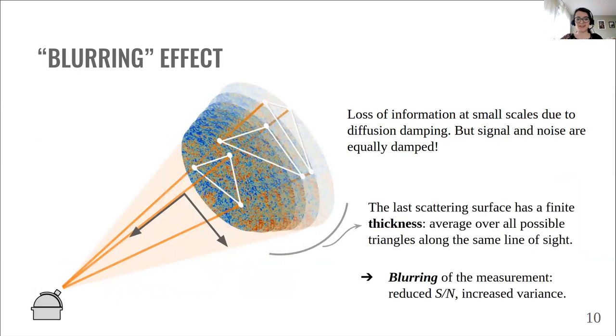Well, this last scattering surface has a finite thickness. And this illustration highlights the fact that the damping effect is not 2D. It's actually three-dimensional. It has indeed three components, two parallel to the surface and one perpendicular to it along the line of sight. So in the end, what we actually observe is an average of all possible triangles along the same line of sight. And this effectively blurs the measurement. In other words, it reduces our ability to detect the signal.